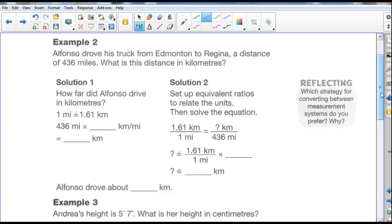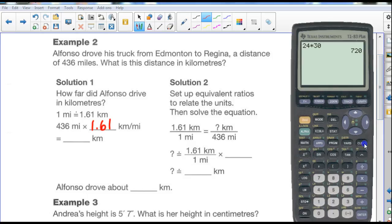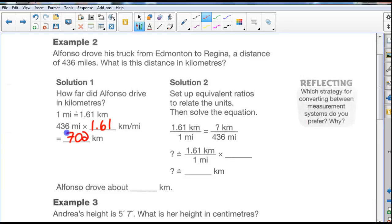We know that 1 mile is 1.61 kilometers, so we can just take the number of miles. We can multiply it by 1.61 kilometers per mile, and we can just take our calculator and do 436, multiply that by 1.61, and the equivalent of distance in kilometers is 701.96. Let's just round it up to 702, so approximately 702 kilometers.